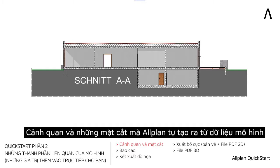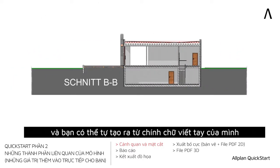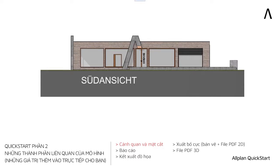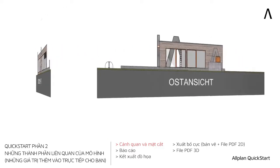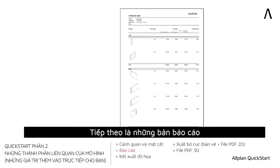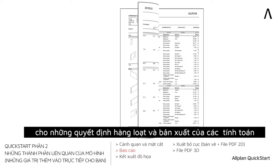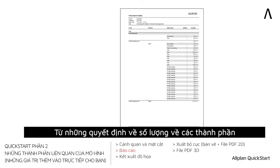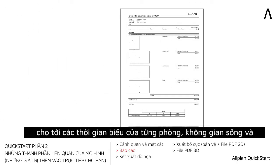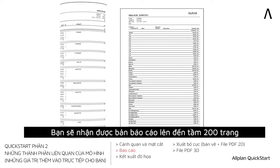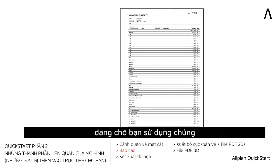First, views and sections that Allplan automatically generates from the model data, and that you can generate with your very personal handwriting. Then the so-called reports, for mass determination and output of calculations directly from the model — from the quantity determination of the drawn components, to the room schedules, to the living spaces, or gross space content calculations. You can look forward to more than 200 supplied reports that are waiting to be used by you.